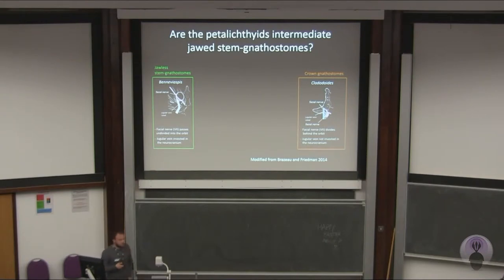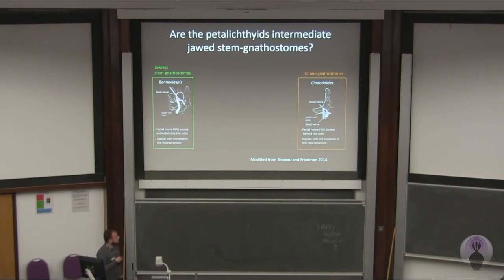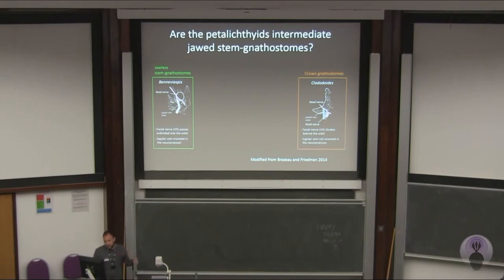One is the morphology of the facial nerve, the pink one. The facial nerve has several branches, and two of these — the hyomandibular and palatine branches — have very different shapes in jawless fish and crown gnathostomes. In jawless fish, it divides after the orbit, so the facial nerve goes undivided inside the orbit and divides after. In crown gnathostomes, it divides before the orbit, so behind the orbit. The jugular vein, a major blood vessel, is not invested in the brain case in crown gnathostomes but is instead invested in the neurocranium in jawless fish.